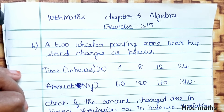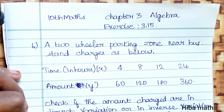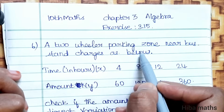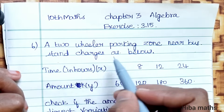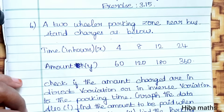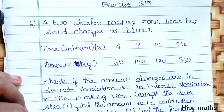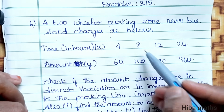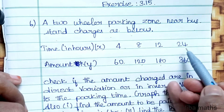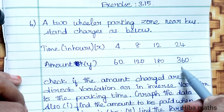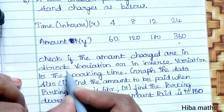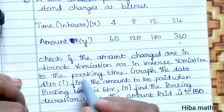Hello students, welcome to Hiba Max, 10th standard, Chapter 3 Algebra, Exercise 3.15, 6th question. A two-wheeler parking zone near a bus stand charges as below: 4 hours — 60 rupees, 8 hours — 120 rupees, 12 hours — 180 rupees, 24 hours — 360 rupees.